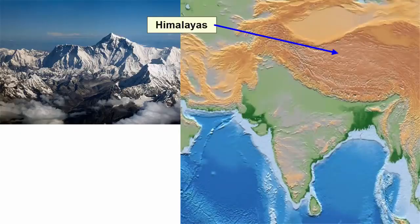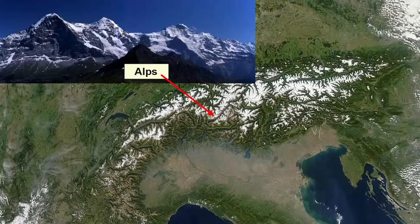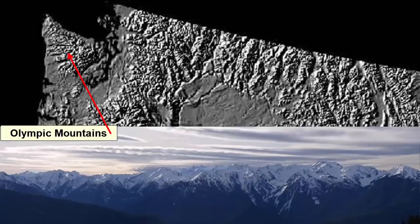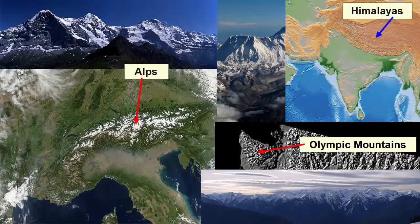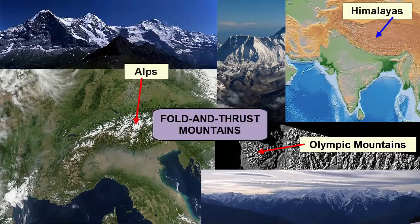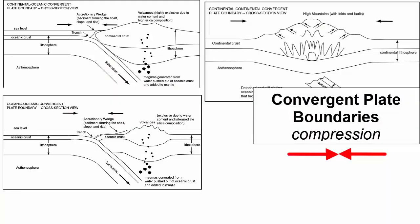The Himalayas in Asia, the highest elevation mountain system in the world; the Alps in Europe; and the Olympic Mountains in Washington state — what kind of mountains are all these? Fold and thrust mountains. When a region is subjected to compression, which happens at convergent plate boundaries, the land is squeezed and thickened, forming mountains.